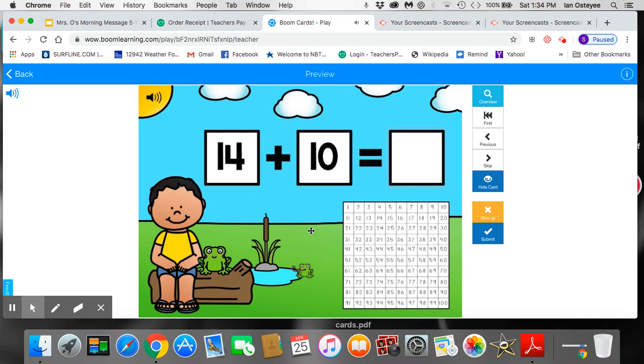Okay guys, so we learned earlier this week that to add groups of 10, we hop down on our 100s chart. So let's start at the number we can't count by 10, and that's 14.